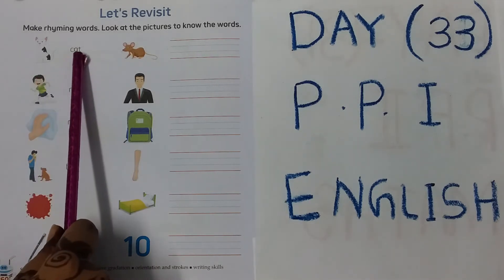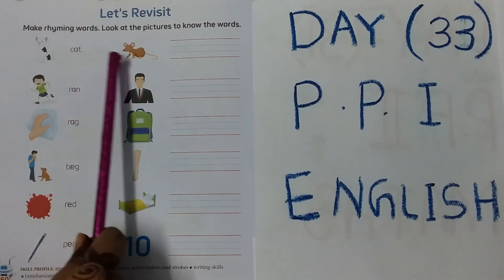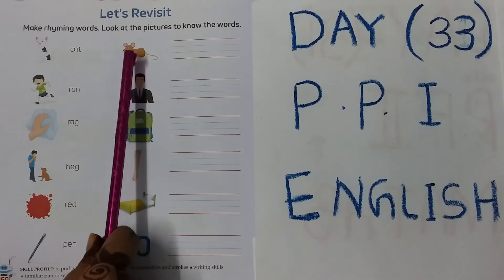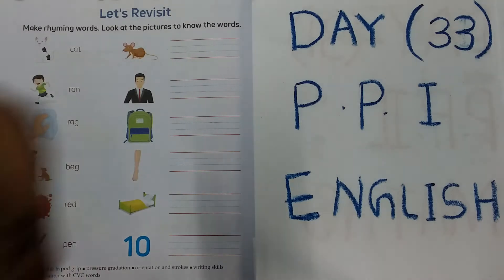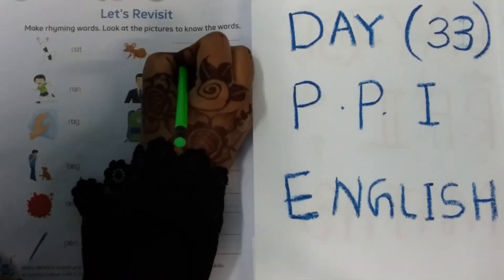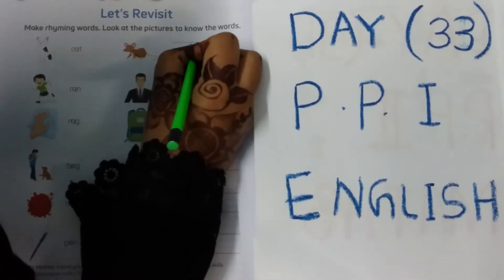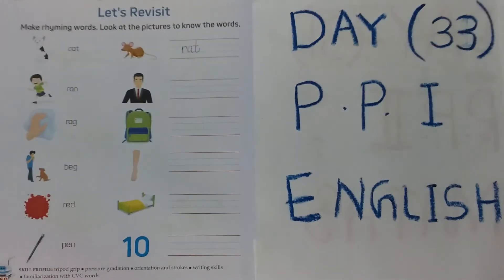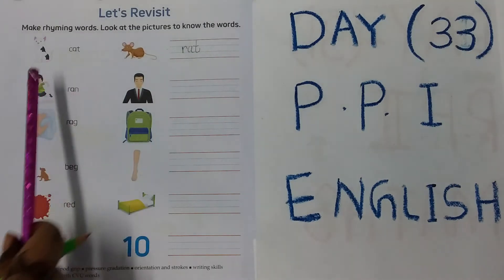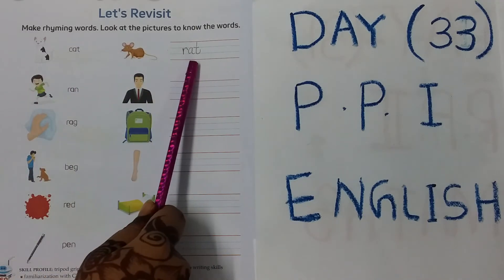Now let's see the spelling, children. C-A-T, Cat. Now Cat and Rat — what is the spelling of Rat? R-A-T, Rat. Here we need to write the spelling of Rat in the lines. It's an A-sound word, children. C-A-T Cat, R-A-T Rat.